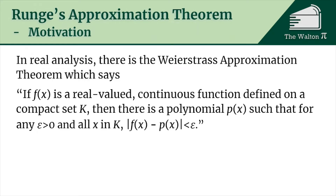In real analysis we have a theorem called the Weierstrass approximation theorem, which says that if f is a real-valued continuous function defined on a compact set K, then there is going to be a polynomial p such that for any epsilon greater than zero and all x in our set K, the distance between f and p is going to be less than epsilon.